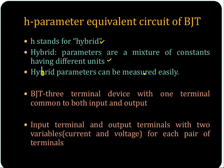This BJT is a three terminal device with one terminal common to both input and output — that is the emitter terminal. So the input terminal and output terminal will each have two variables: current and voltage.